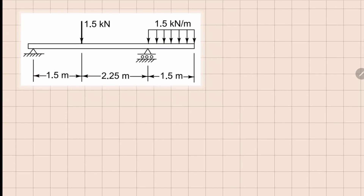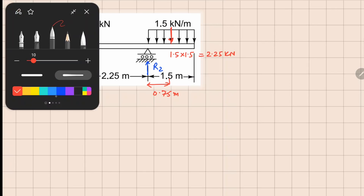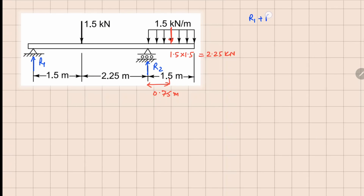This is problem 3.8. Here we have a simply supported beam with two supports, so we have reaction R1 and R2. There is a distributed load and a point load. To find R1 and R2, we can replace the distributed load by a point load right at the center, with a value of 1.5 times 1.5 distance, which is 2.25 kN, at a distance of 0.75 meters.